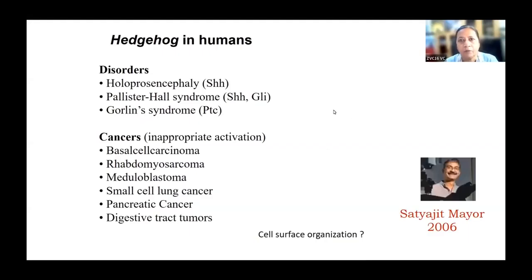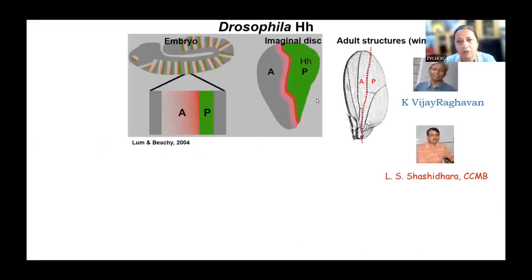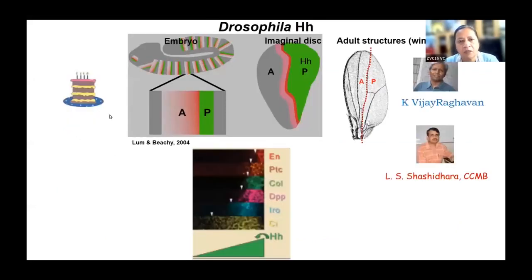This story on hedgehog is a fairly old one, initiated and coordinated by Professor Satyajit Mayor back in 2006. He was interested in the cell surface organization of the protein expressed by this gene. If it is constitutively active, it can give rise to a huge number of disorders and cancers. However, this protein is vitally involved in normal cell growth and differentiation, and organ development.